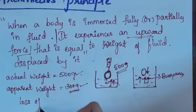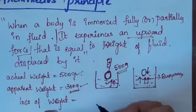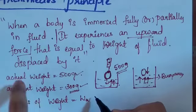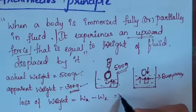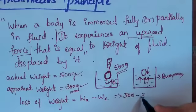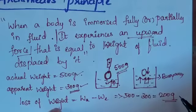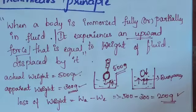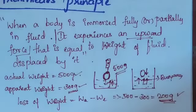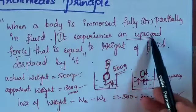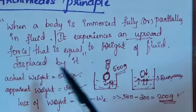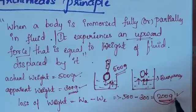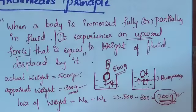So the loss of weight equals actual weight minus apparent weight: 500 grams minus 300 grams equals 200 grams. This loss of weight of 200 grams is due to the upthrust force. The upthrust force equals the weight of the fluid displaced by the object.